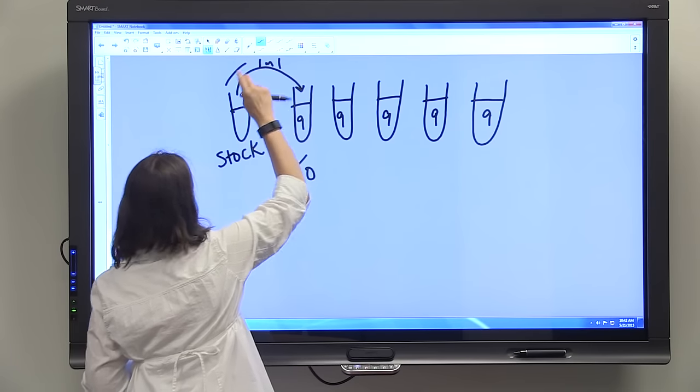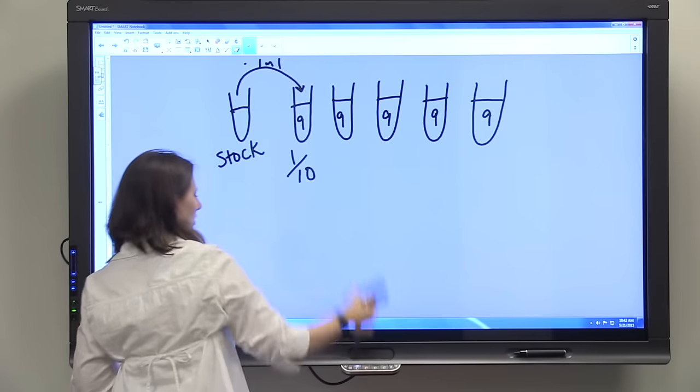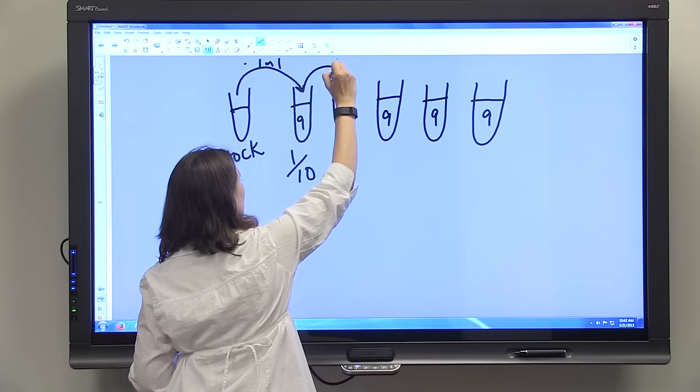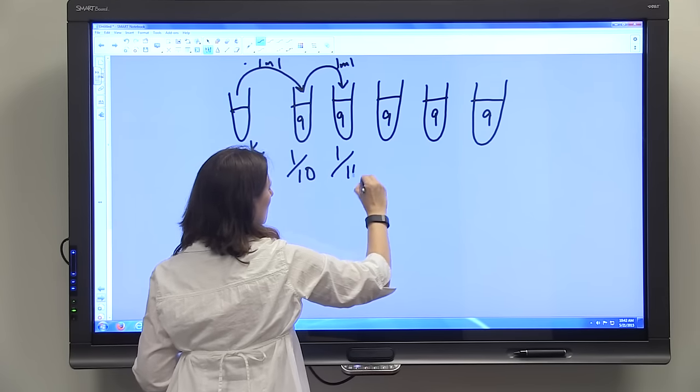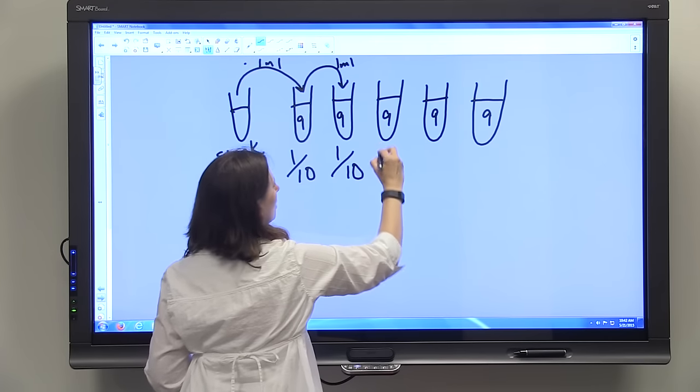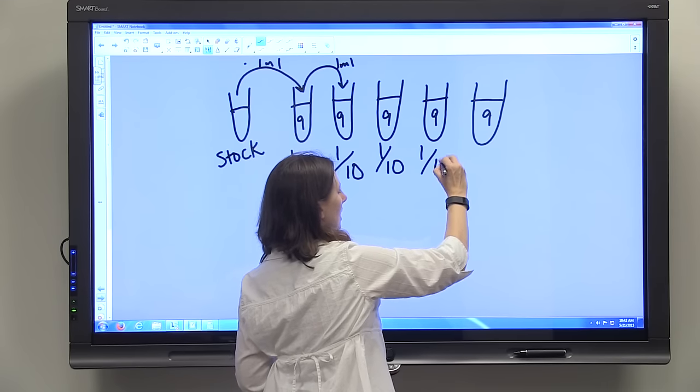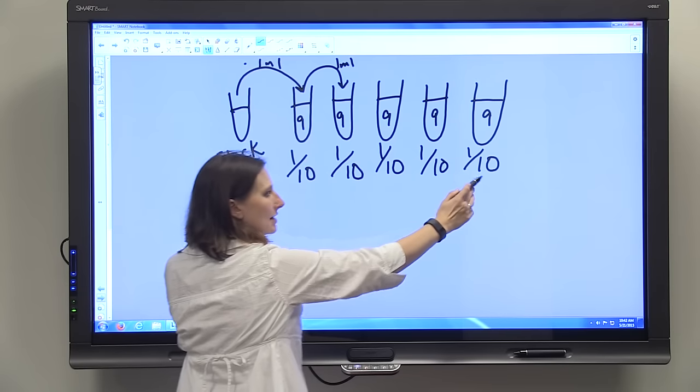It's not a dilution series so we're not using that. You mix that well and add one ml. Again, each time we're going to add one ml to nine ml's for a total of ten ml's. Each time your dilution factor is a tenth.